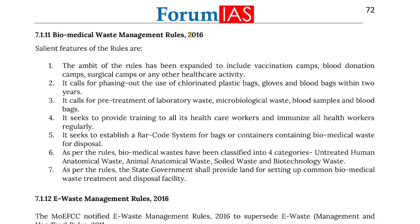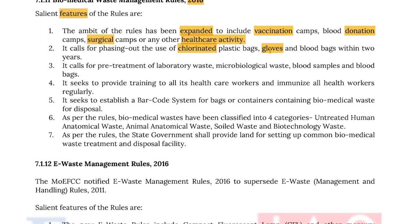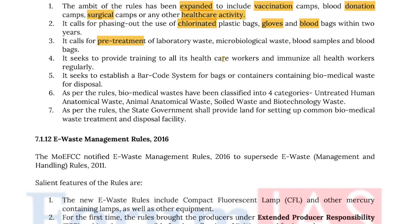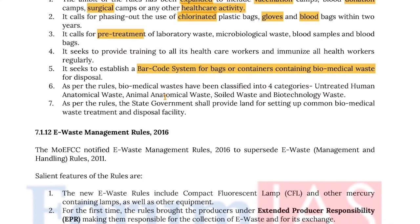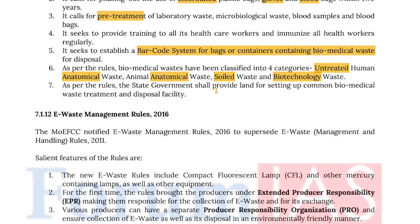Salient features of the Biomedical Waste Management Rules of 2016 include: the ambit of the rule has been expanded to include vaccination camps, blood donation camps, surgical camps or any other healthcare activities; it calls for phasing out of chlorinated plastic bags, gloves and blood bags within two years; it calls for pre-treatment of laboratory waste, microbiological waste, blood samples and blood bags; it seeks to provide training to all healthcare workers and immunize all health workers regularly; it seeks to establish a barcode-based system for bags and containers containing biomedical waste for disposal. Biomedical waste has been classified into four categories: untreated human anatomical waste, animal anatomical waste, soiled waste, and biotechnology waste. The state government shall provide land for setting up biomedical waste treatment and disposal facilities.